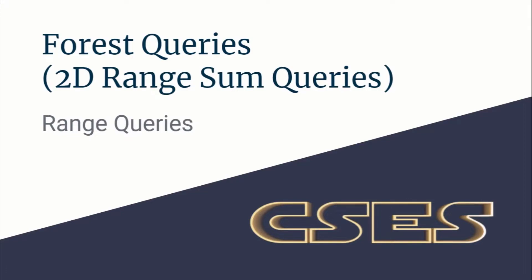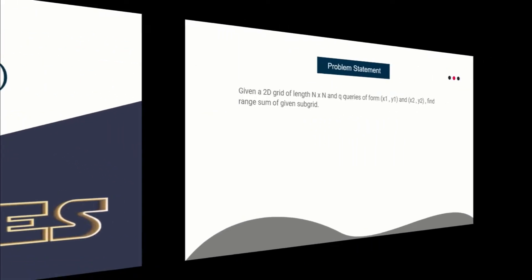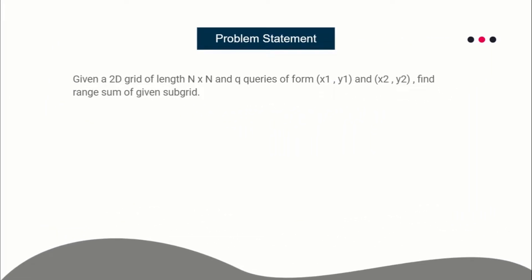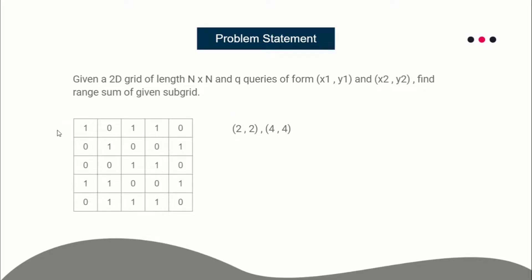Hello guys, this is Code in Code. In this lecture we are going to solve this problem taken from CSES range queries section. The problem statement is quite easy: you are given a 2D grid of size N×N and you are given Q queries of the form (x1, y1), (x2, y2). This defines a range of a sub-grid inside that grid and you have to find the sum of the integers in that sub-grid.